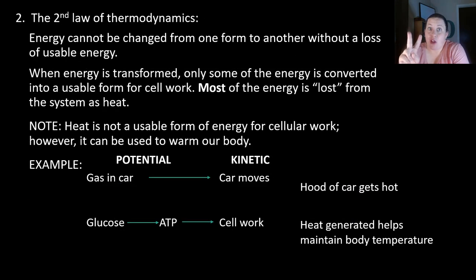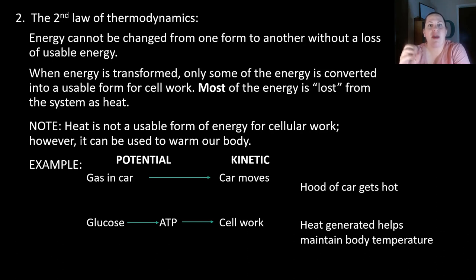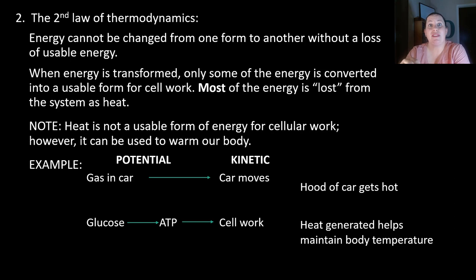The second law of thermodynamics says that energy cannot be changed from one form to another without the loss of usable energy — some energy gets converted into a type we cannot use, and it's mostly heat. When energy is transformed, some of it is converted into an unusable form that the cell cannot use for work. It ends up leaving the system as heat, which is not a usable form of energy for cellular work, though it can warm your body.